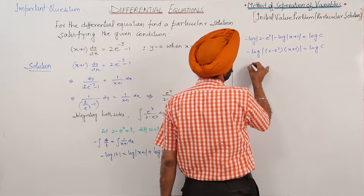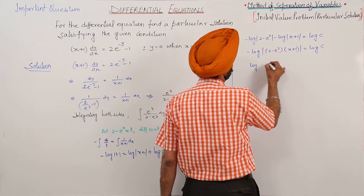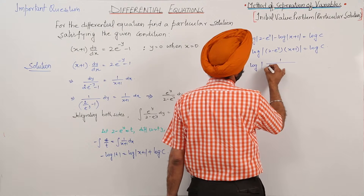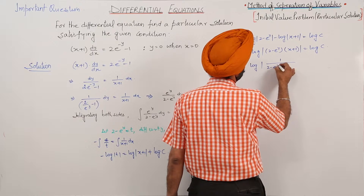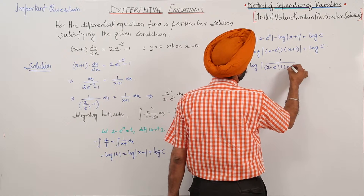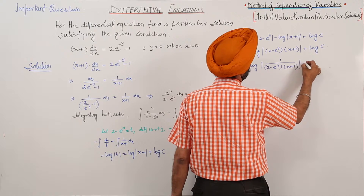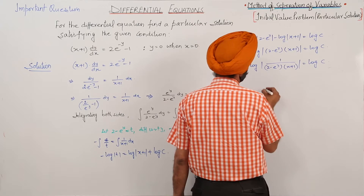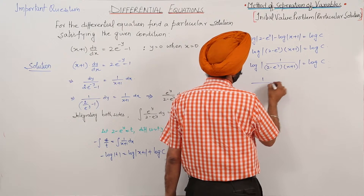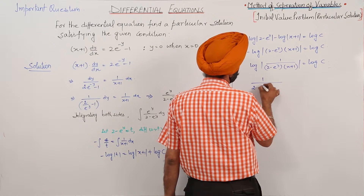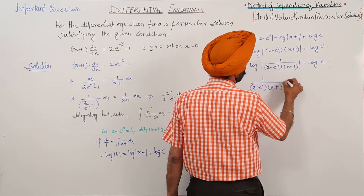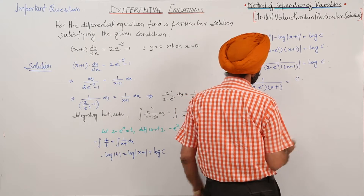Moving the negative sign, we have log of 1 upon (2 minus e^y)(x + 1) is equal to log c, which gives the general solution: 1 upon (2 minus e^y)(x + 1) is equal to c. Let this be equation 1.